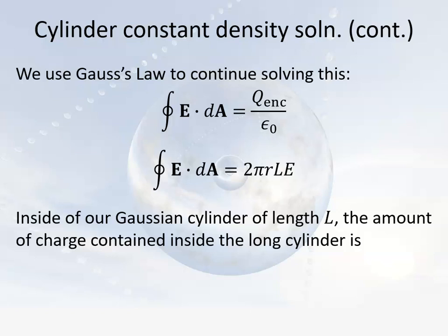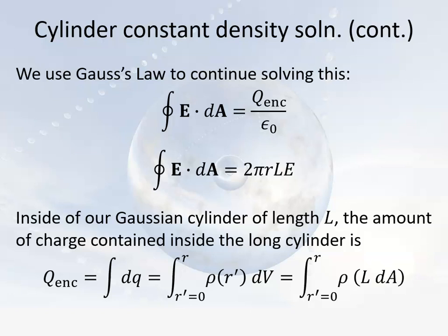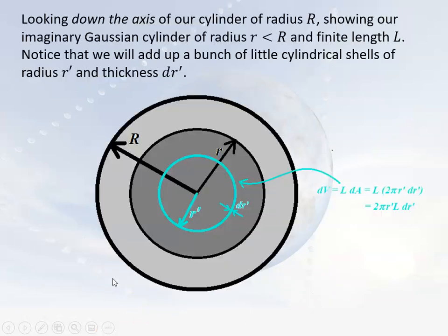Let's say we're dealing with a Gaussian cylinder of radius little r less than big R. In that case, the enclosed charge is going to be equal to the sum of all the little charges — the sum from all of the little cylindrical shells of radius going from 0 out to little r — of the charge density times the volume of each of those shells. The volume of each shell is the length times the area of the shell, and that area is just 2π·r'·dr'. Since the density is constant, I took away the radius contribution.